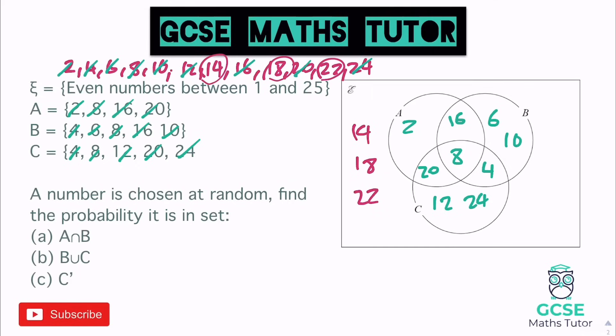For the probabilities: first, A∩B — numbers in A and B. That's 16, and also 8, which is in A and B even though it's also in C. So there are 2 numbers in A and B. There are 12 numbers total in the universal set, so the probability is 2/12. You don't need to simplify, so we can leave it as 2/12.